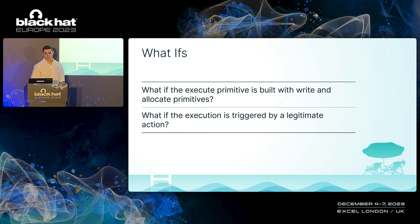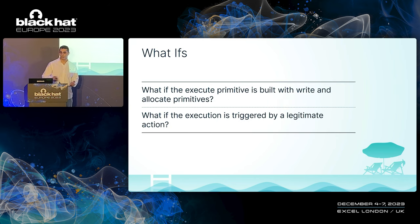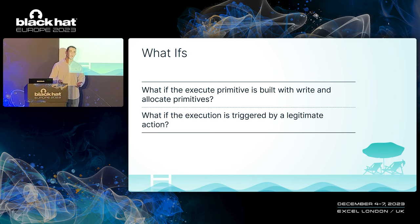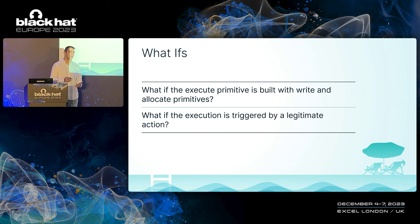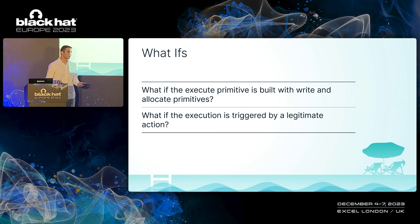Based on the detection approach lessons learned, we know that writing and allocation primitives are not detected. So, what if we created an execution primitive that is based only on writing and allocation primitives? Furthermore, what if the execution is triggered by a legitimate action? What if writing to an innocent file in the system could trigger shellcode in the target process?